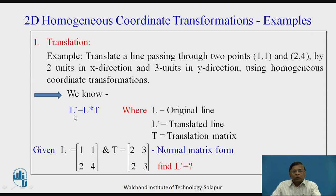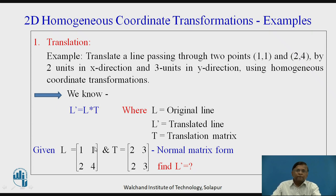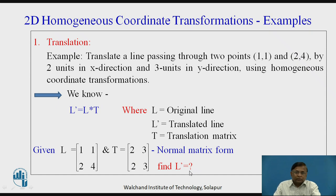We have discussed transformation for a point earlier; now let us talk about the line. A line is represented as a 2×2 matrix. So L-dash will be the translated new line, L is the original line, and T is the translation matrix. With this relationship, we represent the matrices for the given line passing through the two points, and the translation matrix has 2 and 3 as the translational distances along x and y as given, and we have to find L-dash, the new line.